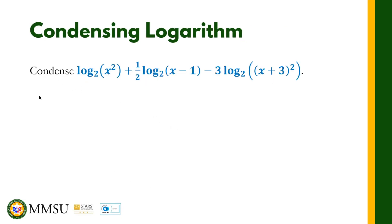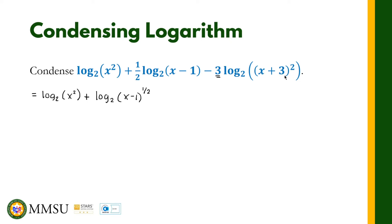We do not have any coefficient for the first term so we just copy it as is: logarithm with base 2 of x squared. For the second term, the coefficient of one-half becomes the exponent of x minus 1, so it is written as the logarithm with base 2 of x minus 1 raised to one-half. For the third term, this coefficient of 3 becomes the exponent, but we already have an exponent of 2, so we multiply: 3 times 2 gives 6. It becomes minus the logarithm with base 2 of x plus 3 raised to 6.